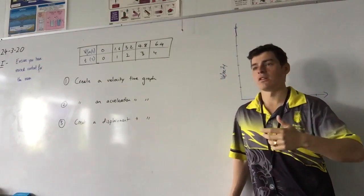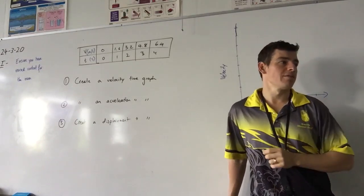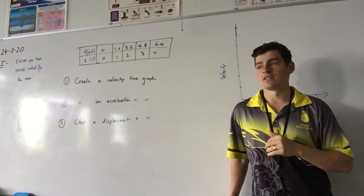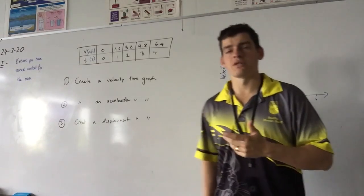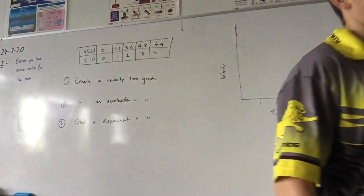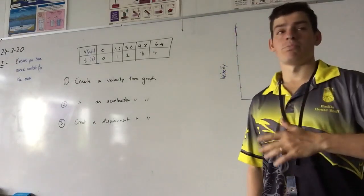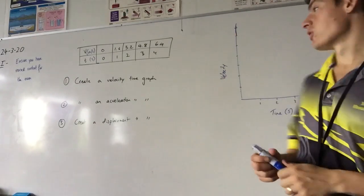So it's increasing by a consistent amount, or is the amount changing? Consistent amount through the entire duration. So what do we expect to see when we draw a velocity time graph? A straight line, positive gradient. Positive gradient, correct.